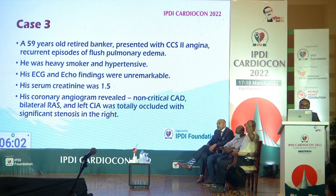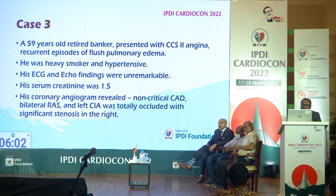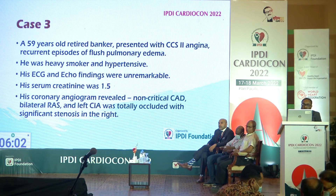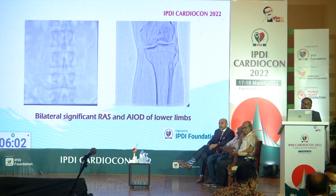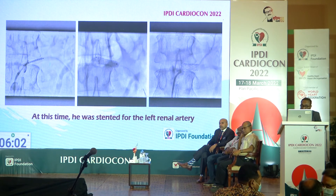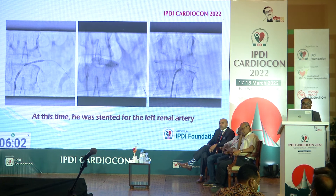Case 3 is very important. A 59-year-old retired banker presented with class 2 angina and recurrent episodes of flash pulmonary edema which could not be explained by coronary disease. He was a heavy smoker and hypertensive. ECG and echo findings were unremarkable. Serum creatinine was 1.5. Coronary angiogram revealed non-critical coronary artery disease, but bilateral renal artery stenosis, and the left common iliac artery was totally occluded with significant stenosis on the right. We fixed the iliacs with stenting, then approached and stented the left renal artery.